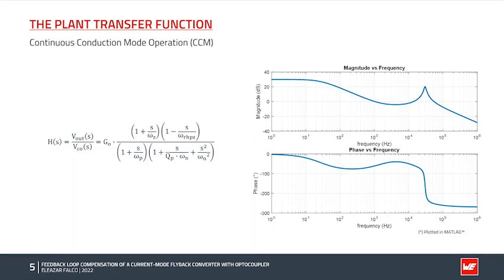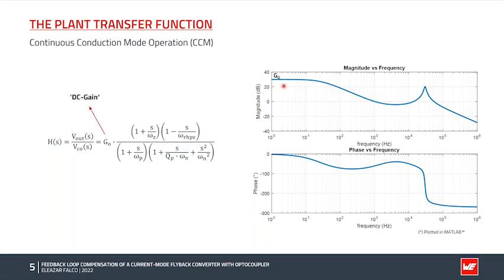Here we can see the structure of the plant transfer function for our peak current mode flyback converter in continuous conduction mode operation, along with a typical Bode plot example showing magnitude and phase versus frequency. The different components of this transfer function include first the so-called DC gain, which is simply the magnitude in the lower frequency range, well before the dominant pole frequency.